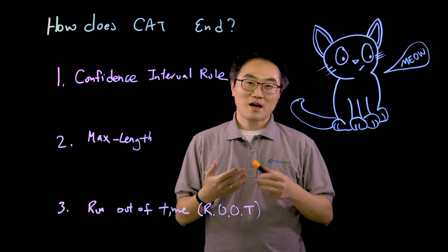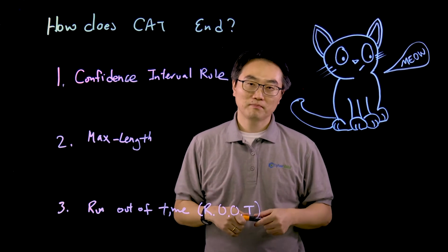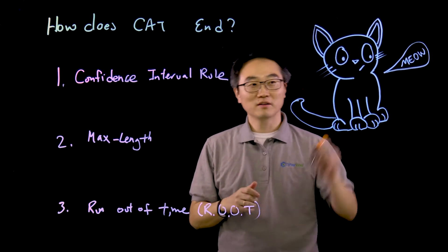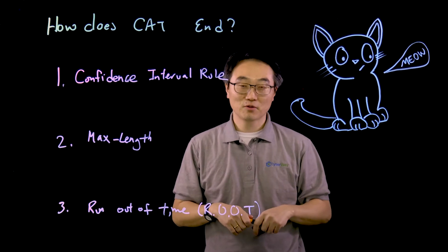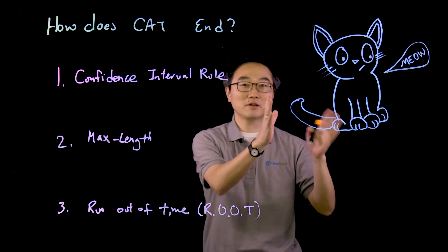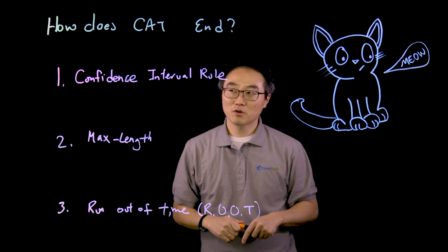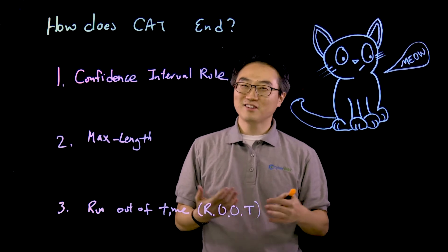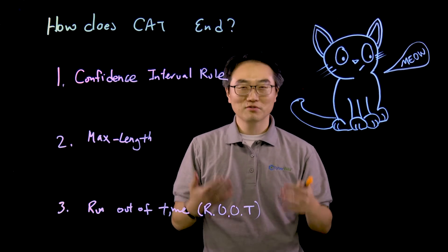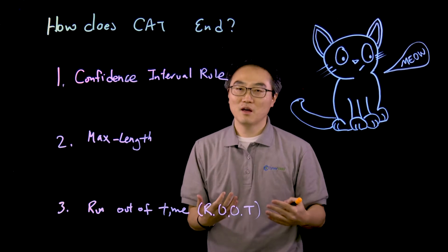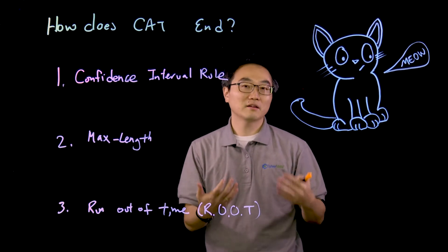We talked about how long the test was earlier. Now let's talk about how CAT ends—when the cat's nine lives are over. I hope you notice a brand new cat we drew specially for you. There are three ways the CAT exam ends in computer adaptive form. These have a lot of fancy words, so let's dig deep because this can provide insights on how to attack the CAT.